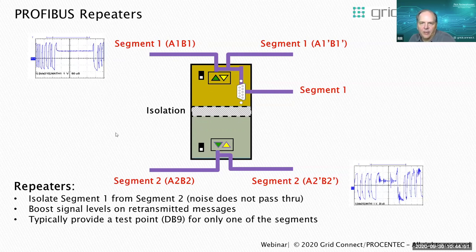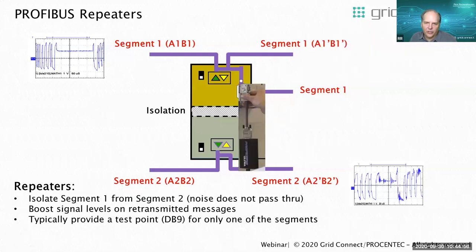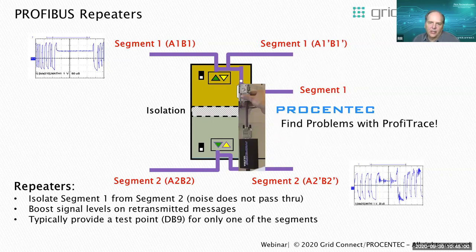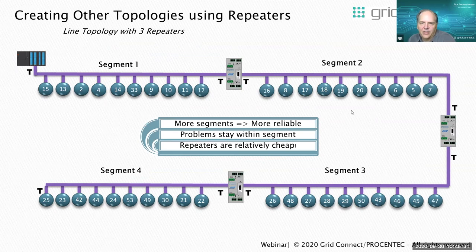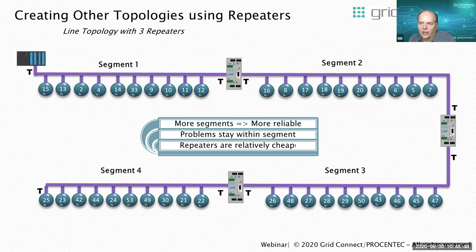If you do have trouble, you can connect your troubleshooting tool like Profitrace and check to see where the problem is — who has the reflections. In this case, looking at the top segment, if there's no problem up there, I would have to move my Profitrace to a connector on a device on segment 2 to see any noise, because the isolation does not allow me to see noise on the other segment. Following this example: if you add more segments, your networks become more reliable. Problems stay within the segments. A problem at address 7 won't show up on segment 3 or 4. Repeaters to add segmentation cost a couple hundred dollars and make a more reliable network.